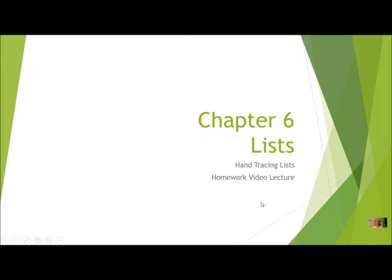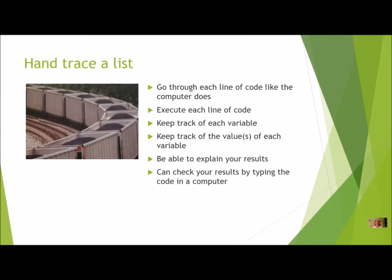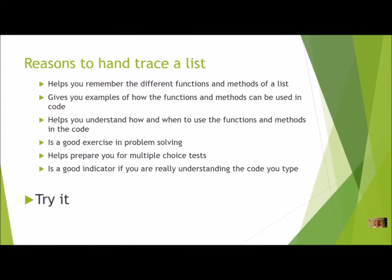For today's lesson we're going to practice hand tracing lists. We've done some hand tracing in the past with our for loops, while loops, and functions. When we hand trace, we go through each line of code like the computer does and execute each line. Your task is to keep track of each variable and the values of each variable. At the end you should be able to explain your results, and you can check by typing the same code into the computer — but that should just be a check after you've done the hand tracing yourself.